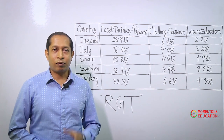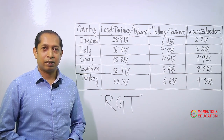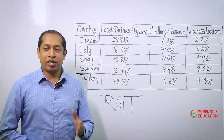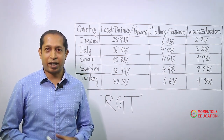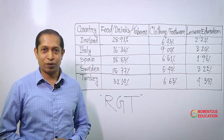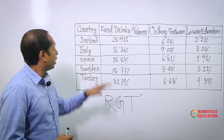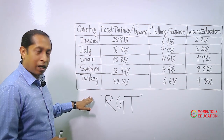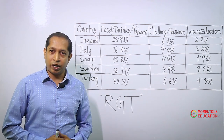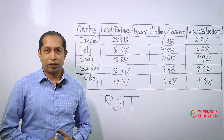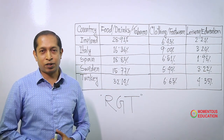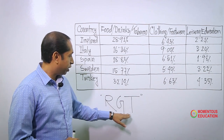Viewers, you can see I have taken a table chart here. With a table chart, most of the students make mistakes. Do you know why? Because it has two issues — countries and items. That means any country has been shown in terms of how they spend. This theory is called RGT.